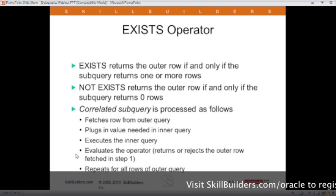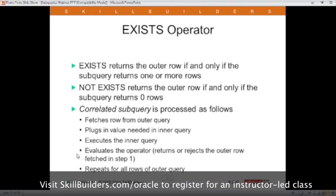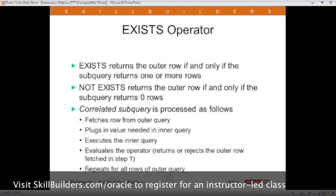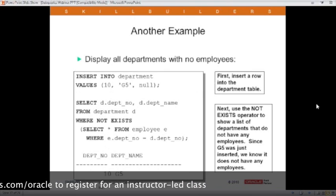If the outer query is an exist, then we say if there are any matches in the inner query, then return the outer row. If it's a not exist, we say if there are no matches, then return the outer row. And since it's correlated, it repeats for every row of the outer query. So that's our exists and not exists.